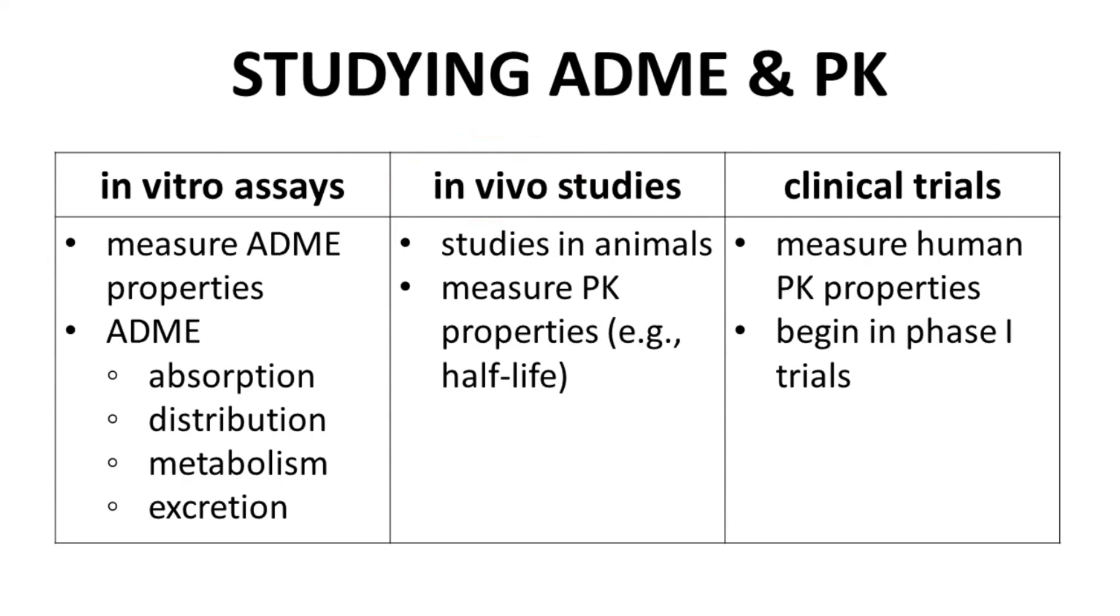If the molecule is advanced into the clinic, the human PK properties will be confirmed. Understanding human PK begins with the very first phase one trials. This slide gives a general idea of when different types of data are collected on a molecule of interest during drug discovery and early development.